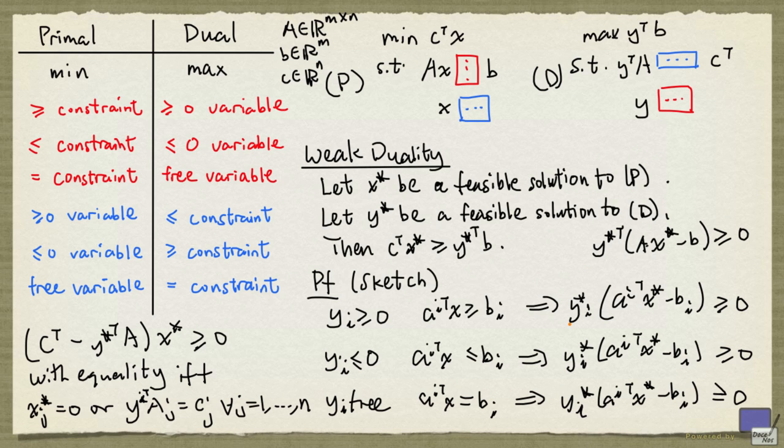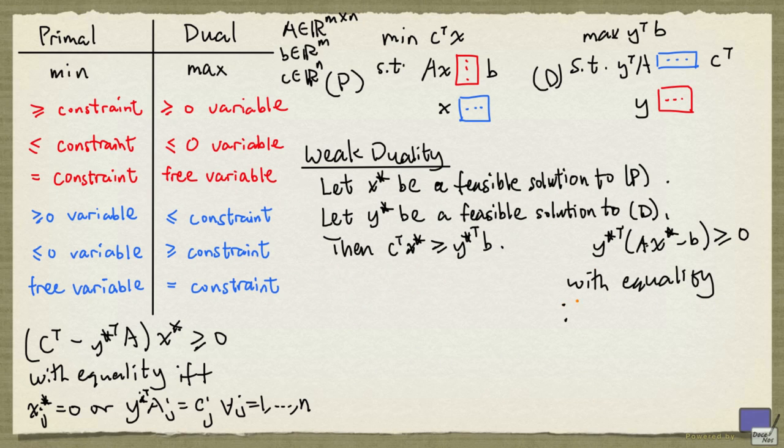In other words, either yi star is zero, or this is zero, or both. Here, ai transpose denotes the ith row of a.